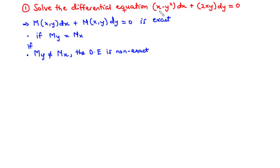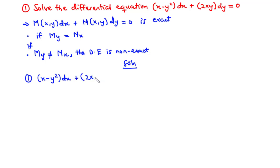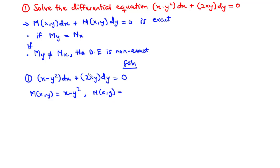Our first example is to solve the differential equation (x − y²)dx + 2xy dy = 0. We identify M(x,y) = x − y² and N(x,y) = 2xy.